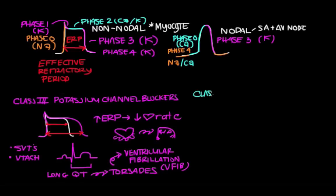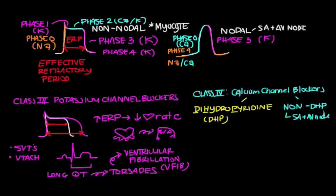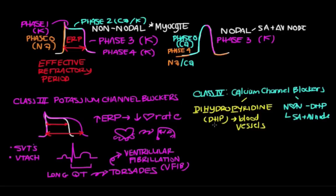Class 4 antiarrhythmics are your calcium channel blockers. They come in two types: dihydropyridine (DHP) and non-dihydropyridine calcium channel blockers. Non-dihydropyridine calcium channel blockers work at your SA and AV nodes — so they work at the heart. Dihydropyridine calcium channel blockers work at blood vessels. As a memory trick, replace the 'O' in 'non' with a heart symbol, to remember that non-dihydropyridine blockers work at the heart. Dihydropyridine calcium channel blockers have little to no effect at the SA and AV node.